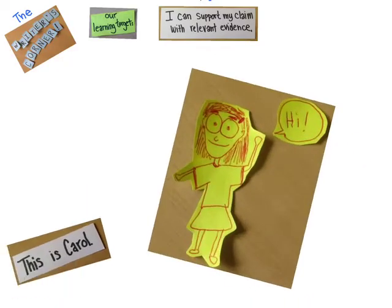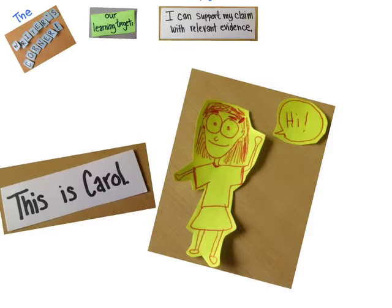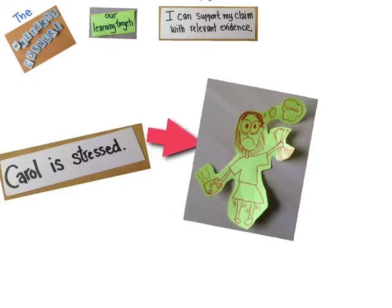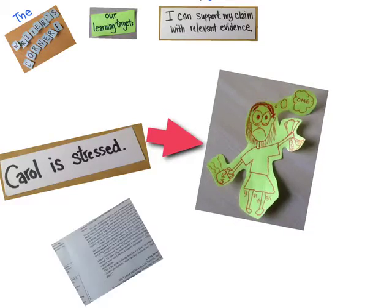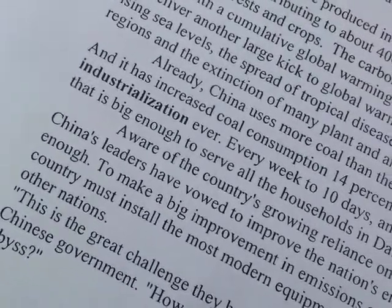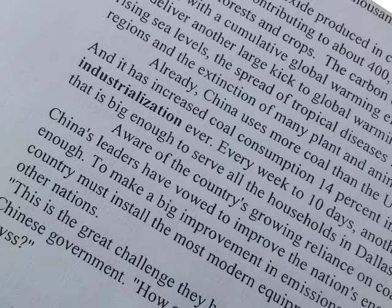This is Carol. What Carol doesn't know right now is she's about to get a big writing assignment from her writing teacher. Carol is stressed. She doesn't know how to find evidence or write an argumentative paper, and she just feels like she's drowning in paper and reading. So here at the Writer's Corner, we're going to see if we can help her out.